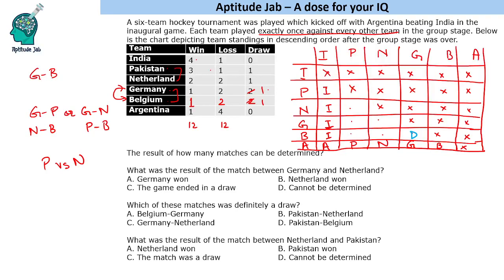Pakistan has just one loss and that loss is against India, since India beat all teams except Argentina. Pakistan's one draw match is either with Germany or with Belgium — so Pakistan cannot draw against Netherland. Therefore Pakistan defeats Netherland. The result: Pakistan is the winner against Netherland.